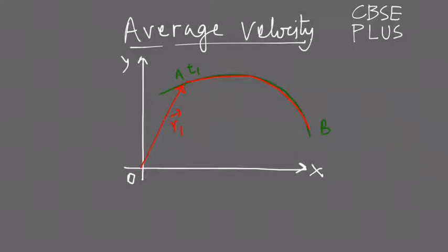And this point is the point where the position vector is R2. So there are two position vectors of an object, and when it reaches here the time is T2, a different time.